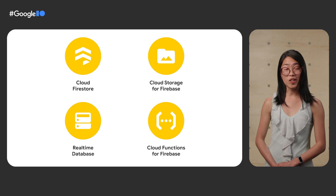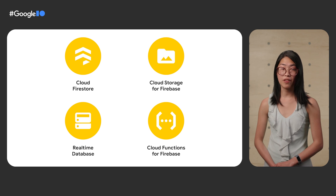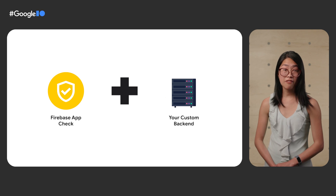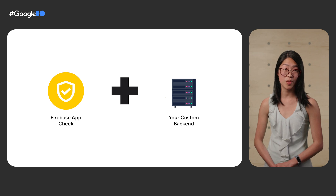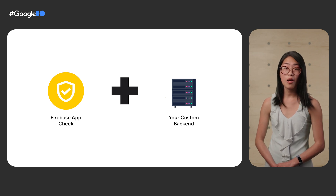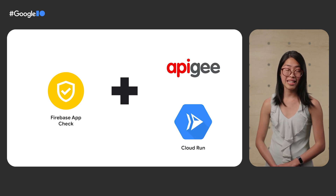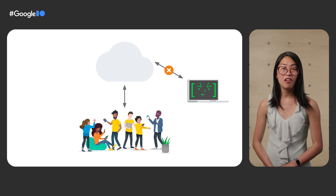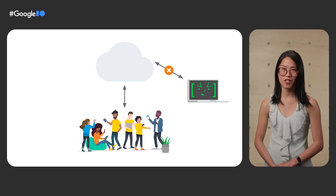Firebase App Check is currently integrated with Cloud Firestore, Cloud Storage, Real-Time Database, and Cloud Functions, with more product integrations to come. Beyond Firebase, App Check also makes it easy to help protect the API endpoints on your own self-hosted backends or custom resources with the help of the Node.js Admin SDK. App Check also works great with services like Apigee and Cloud Run to add that extra layer of protection. With Firebase App Check, Fertile users can be confident that the scores they see on the leaderboard are from fellow players instead of cheaters using a command line.